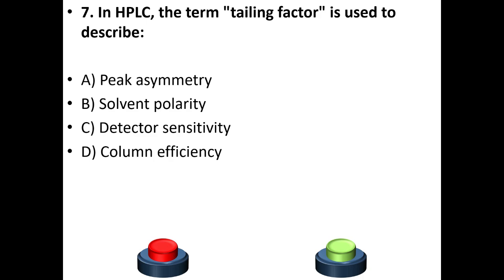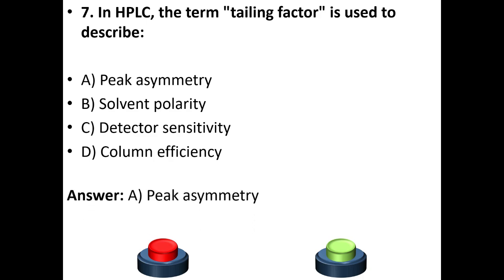Seventh question: In HPLC, the term tailing factor is used to describe — A. Peak asymmetry. B. Solvent polarity. C. Detector sensitivity. D. Column efficiency. Your answer is option A: Peak asymmetry.